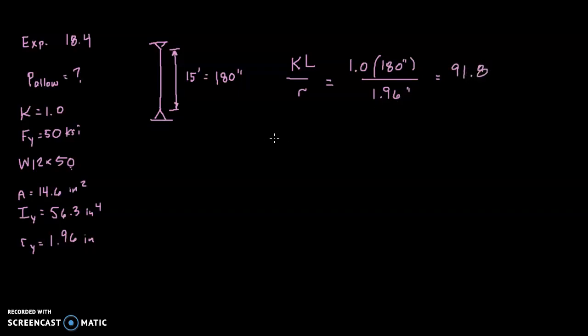Now what we have to do is we have to compare that to 4.71 times the square root of E over F sub y, which is 4.71 times the square root of 30,000 divided by 50. And we calculated that value earlier, and what did we find that to be? 115.4. So is 91.8 compared to 115.4 greater or less than? Obviously it is less than.